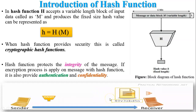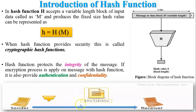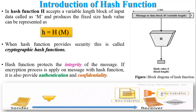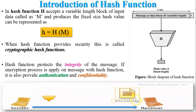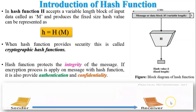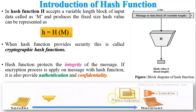To better understand how a hash function works: a hash value is created from a message and appended to that message. At the receiver side, the appended value is removed from the message and stored, then a new hash value is generated from the message. Both values are compared — if they are the same, the receiver accepts the message; otherwise, the receiver discards that message.